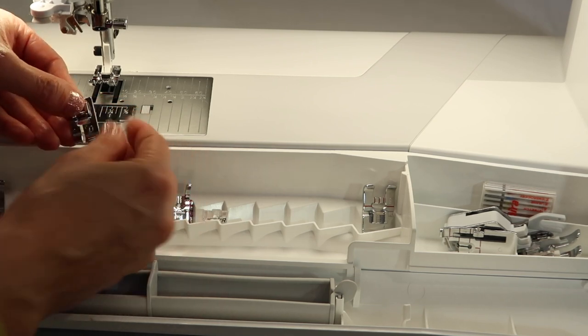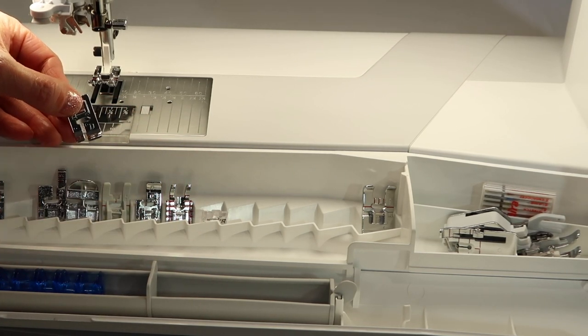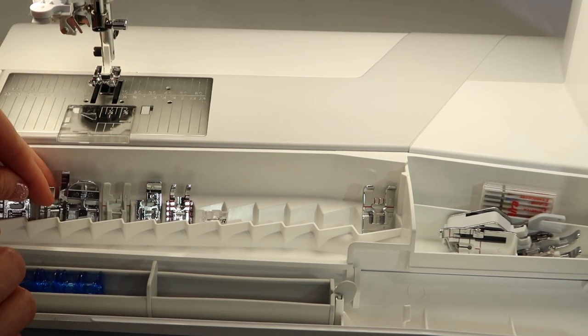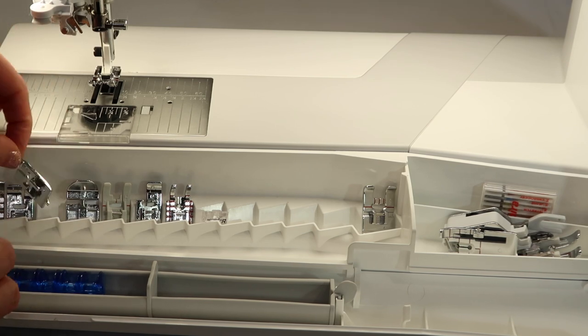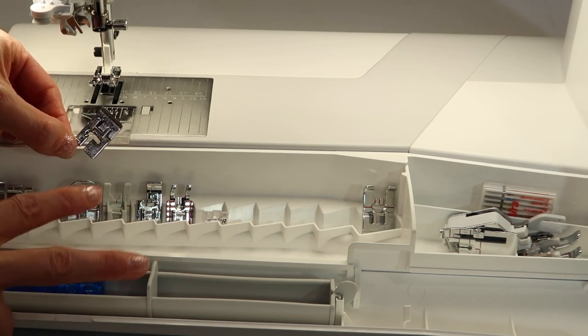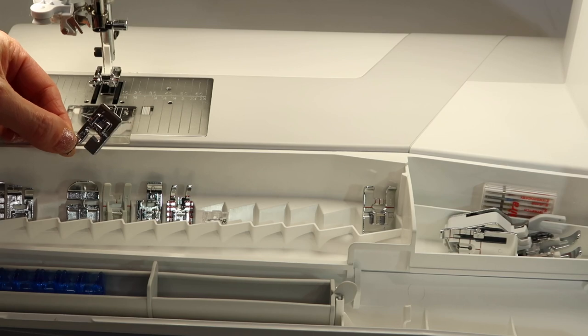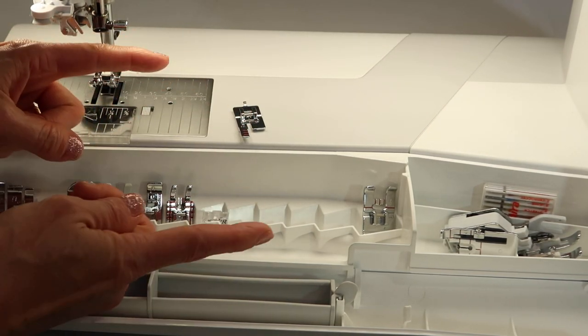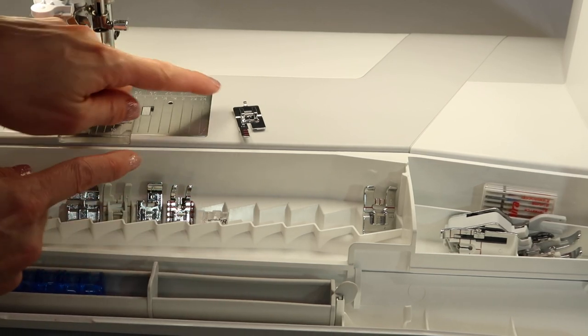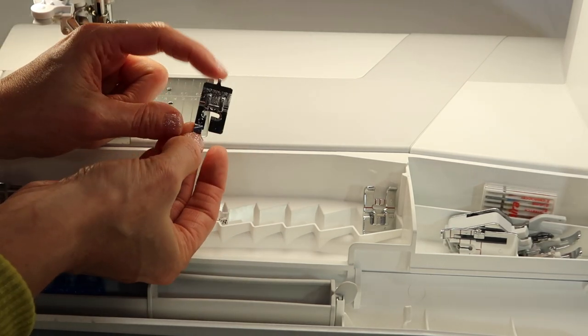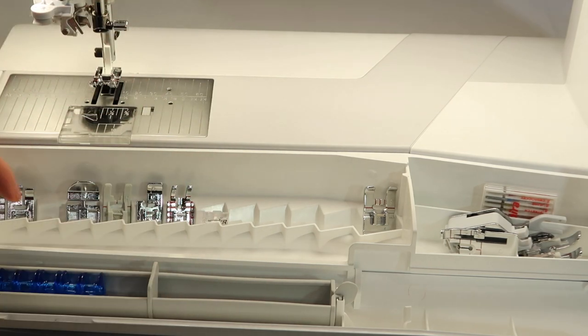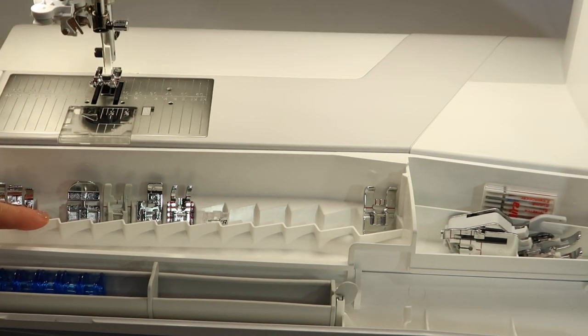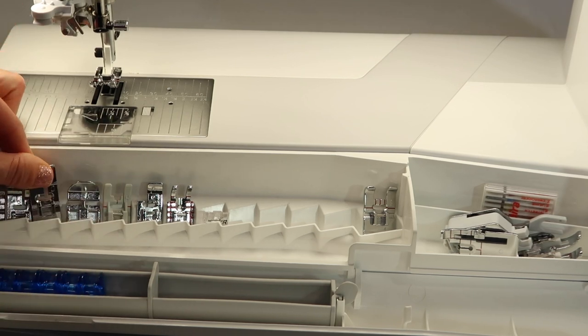All the feet are lettered. D is your blind hem foot and C - by the way, this is a buttonhole foot. You actually have two buttonhole feet that come with this machine. This one is the manual buttonhole foot, allowing you to do buttonholes this long if you want, but it has a little part at the end. This little guy here has a small opening in the third slot from the left so it can sit down far enough.